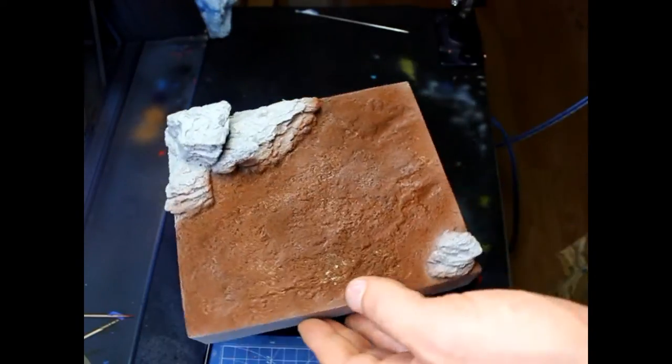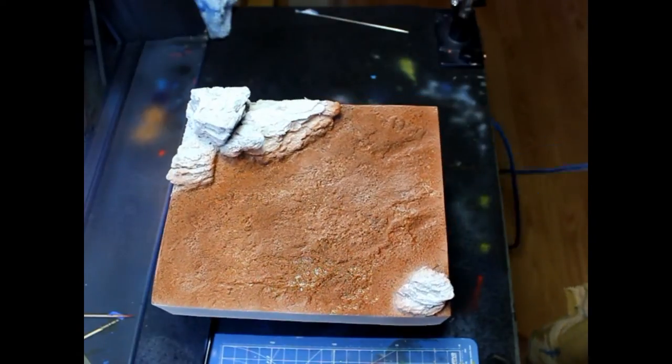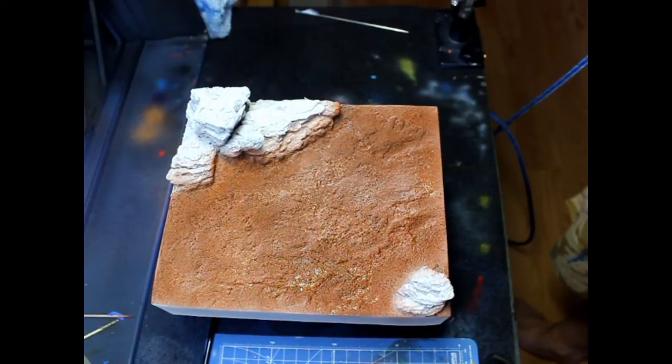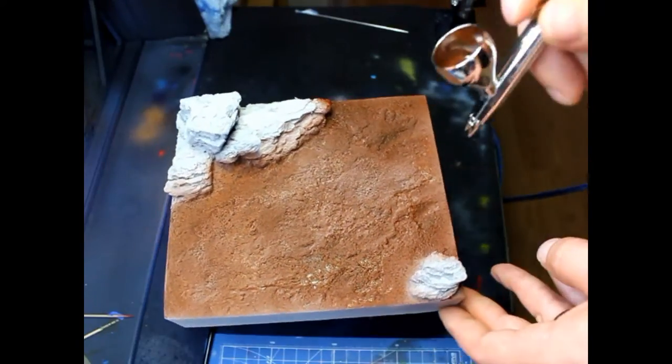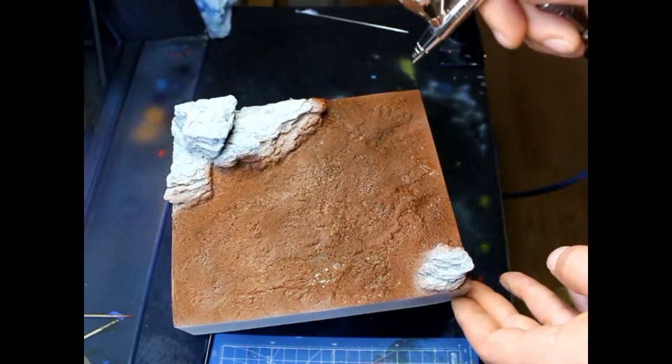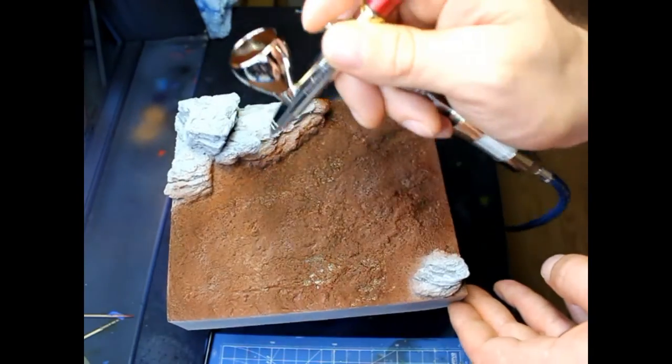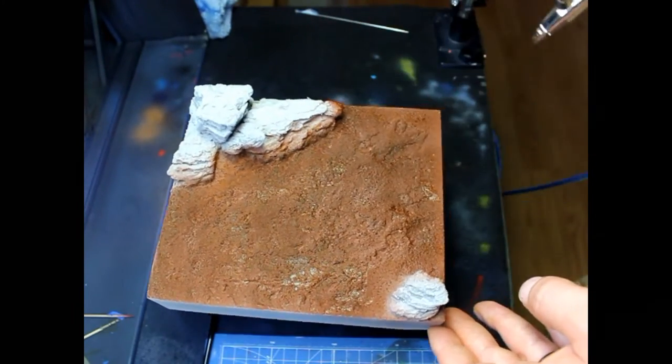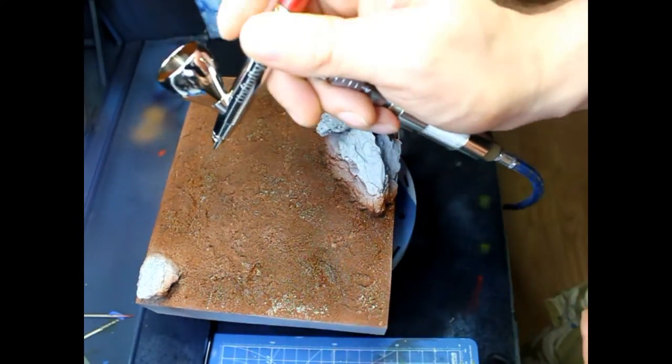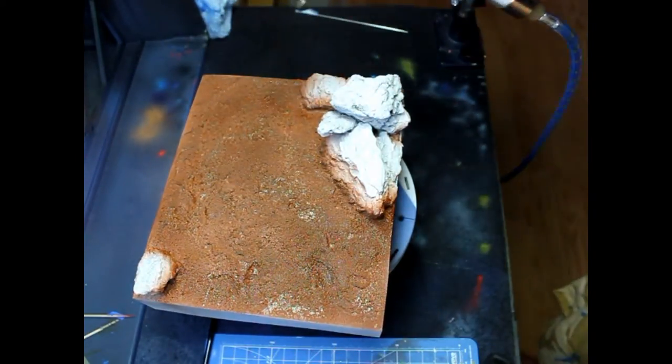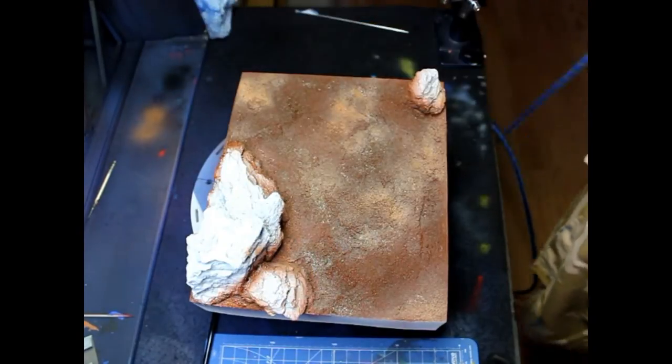And then after that what I'm going to be doing is I'm going to be randomly spraying some US sand I think from Vallejo Air and then some black also in some areas on the grass. I'm just going to make it brown just to make it not one shade of brown like earth would be lighter and darker in some areas. So I really want to recreate that with the airbrushing of it.